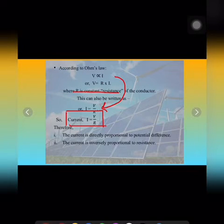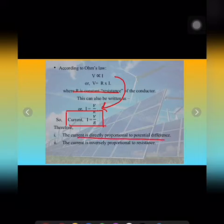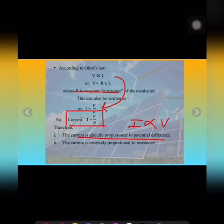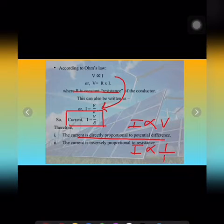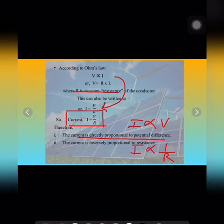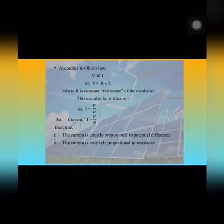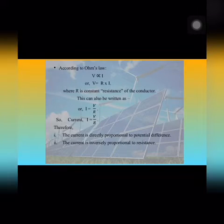From this relation, current is directly proportional to the potential difference V, and the current is inversely proportional to resistance. Ohm's law gives the relationship between voltage or potential difference, current, and resistance, which is constant.